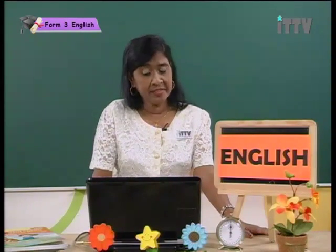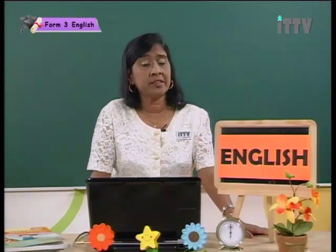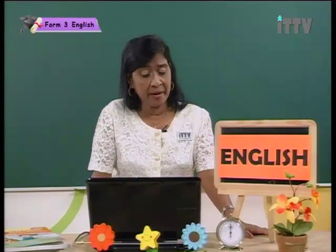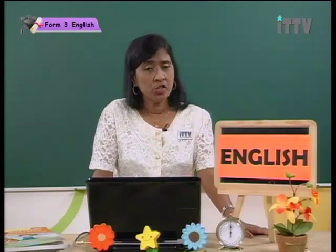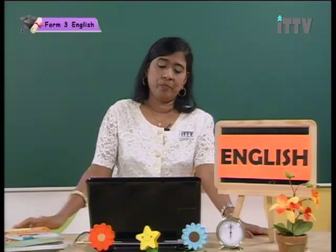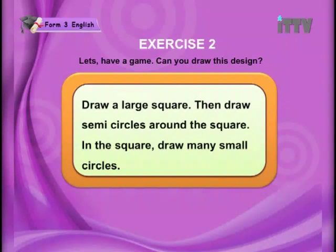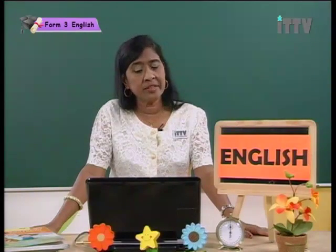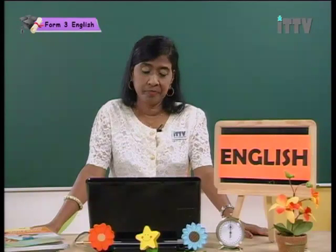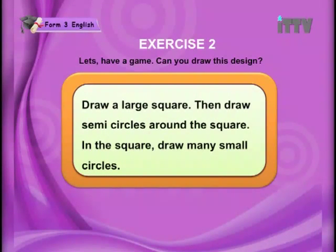Now we are going to go on to another exercise where you are going to have a game — Exercise 2. Can you draw this design? This design is based on shapes and colors. Get ready. Draw a large square. Then draw semi-circles around the square. In the square, draw many small circles. Look at the adjectives used in these instructions: large, semi — 'semi' tells you what kind of circle — square, and small. All the adjectives are there.